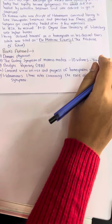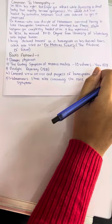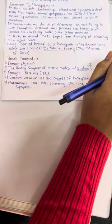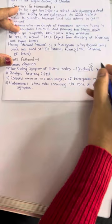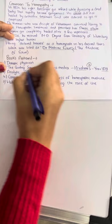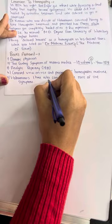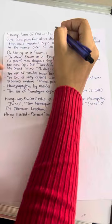What are the books that Constantine Herring authored that we should read? Domestic Physician is the first book. The second is the guiding symptoms of Materia Medica, 10 volumes. Most important contribution of Dr. Constantine Herring is the guiding symptoms of our Materia Medica, 10 volumes in the year 1879. Analytic Repertory in 1881. Condensed view on rise and progress of homeopathic medicine. And lastly, Hahnemann's three rules concerning the rank of the symptoms.